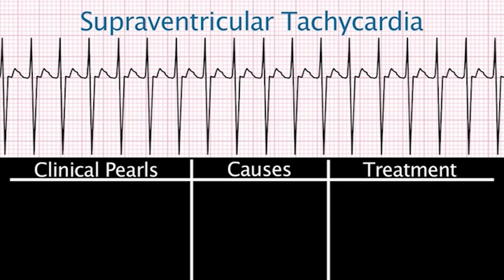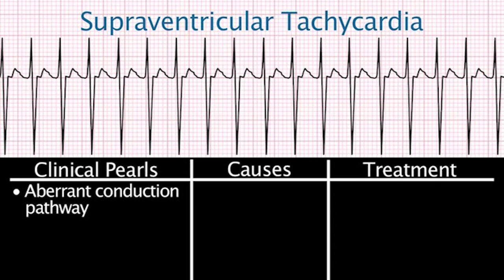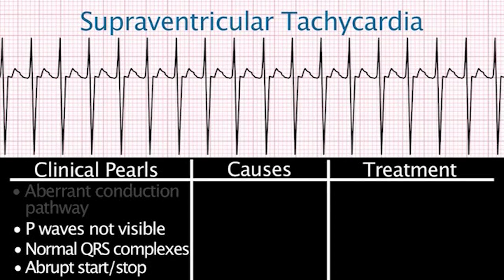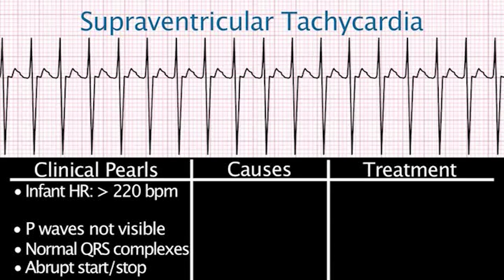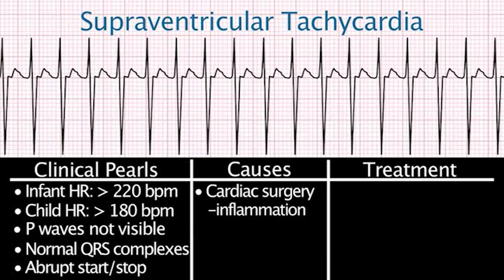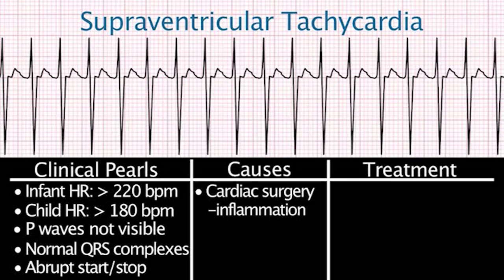In supraventricular tachycardia, there is an extra pathway that the electrical impulse follows, which causes a fast heart rate. P waves are not visible and the QRS complexes are normal. The rhythm starts and stops abruptly. In infants, the heart rate can be greater than 220 beats per minute; in children, the heart rate can be greater than 180 beats per minute.